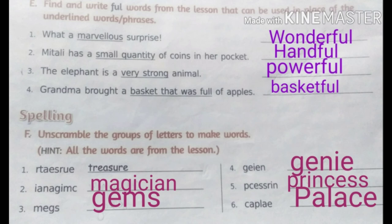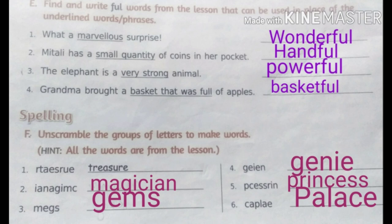The third one is m-e-g-s, with these letters we can make the word gems. The next letters are g-e-i-e-n, with these letters we can make the word genie, which is already mentioned in your lesson. The next letters are p-c-e-s-r-i-n, with these letters we can make the word princess. The next word is c-a-p-l-a-e, with these letters we can make the word palace, which is also mentioned in the lesson.